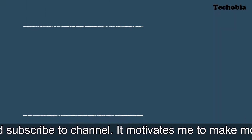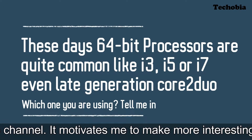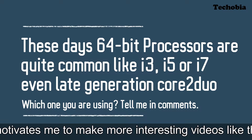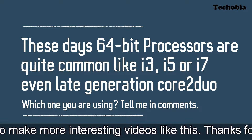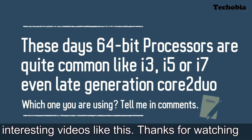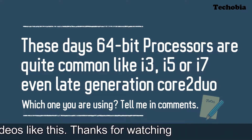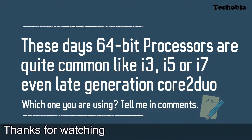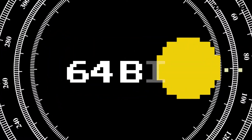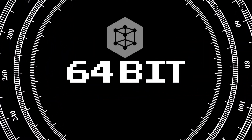First, let's start with the basic stuff. These days 64-bit processors are quite common — even if you are using i3, i5, i7, or even last generations of Core 2 Duo. These are all 64-bit processors.